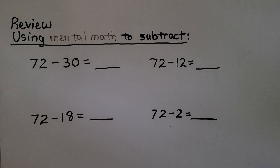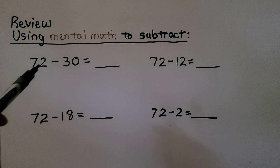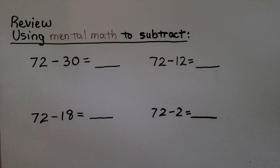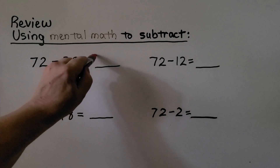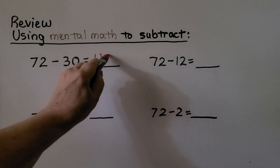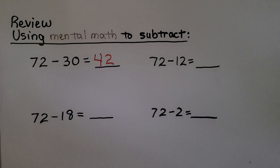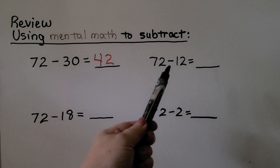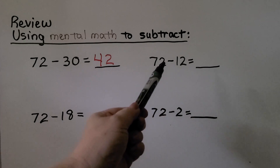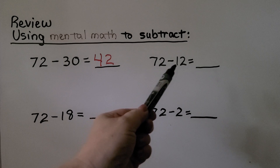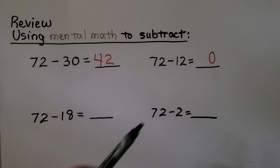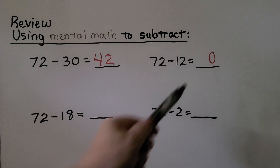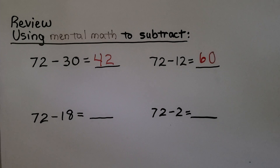We're going to review using mental math to subtract. Here we have 72 minus 30. This is an easy one because 30 is a tens number — we just need to take away 3 tens from the 7 tens. That's 4 tens, and we just put the 2. It's equal to 42. Here we have 72 minus 12. We're going to take away the 2 and a 10. If we take away the 2, there's going to be a 0 in the ones place. If we take away 1 ten from 7 tens, that's 6 tens. It's equal to 60.